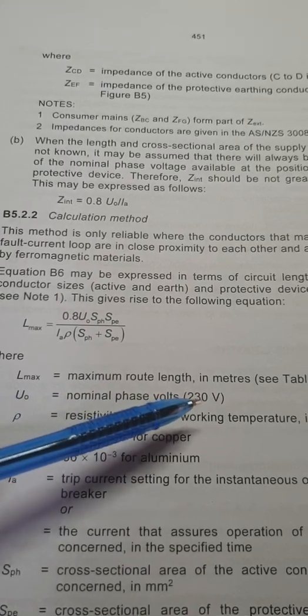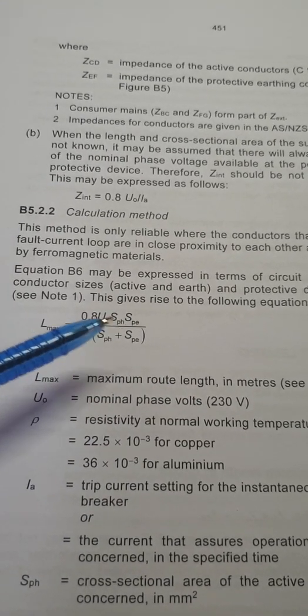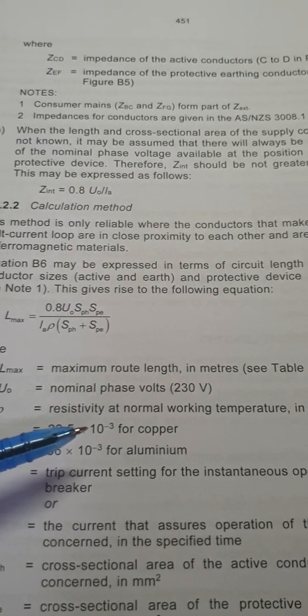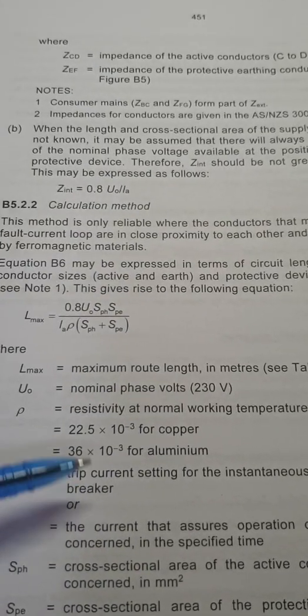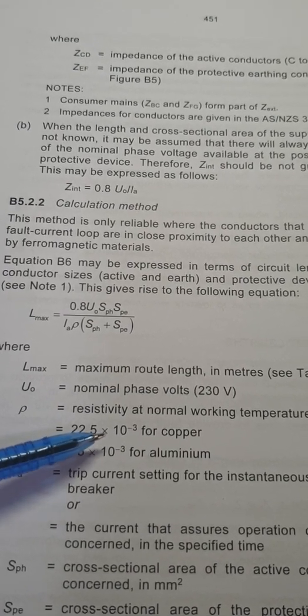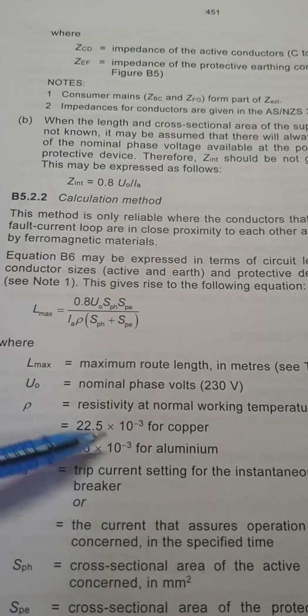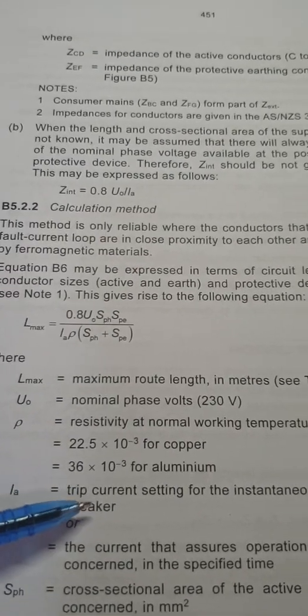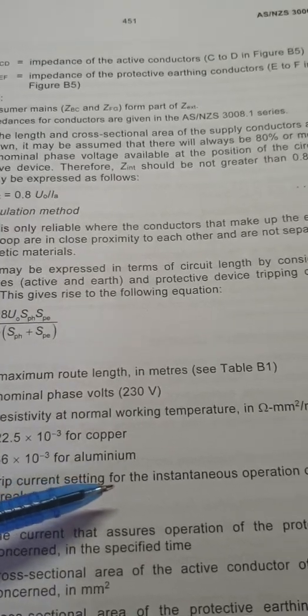L max is for the maximum length. That's what we're working out. Then we have nominal voltage is 230 volts. That's under the V here. Then resistivity of the working temperature in the cables per meter, so 0.225 worked out to be 22 times 10^-3, same with the 36. So that's for our P.